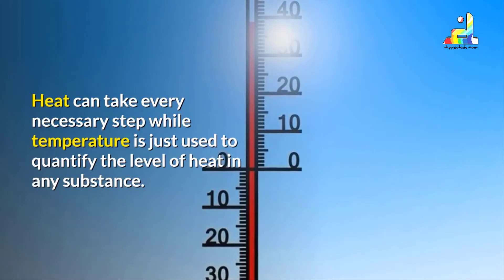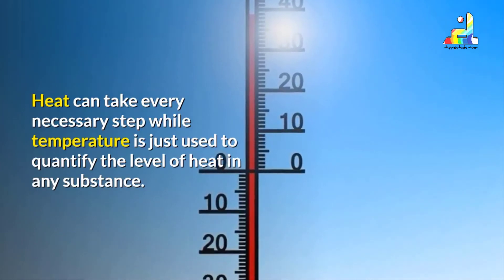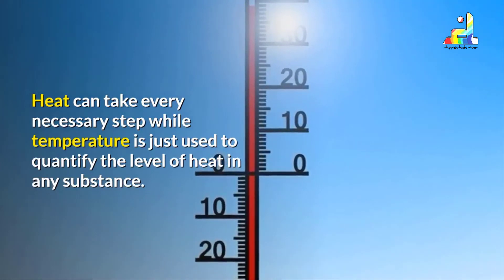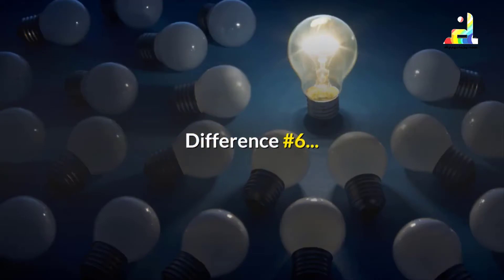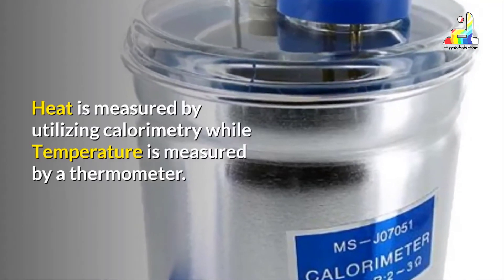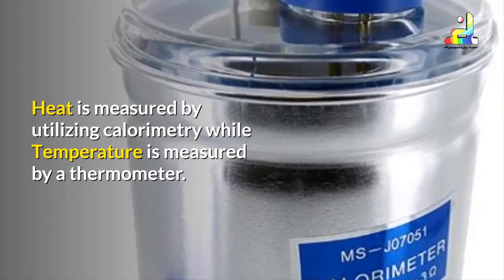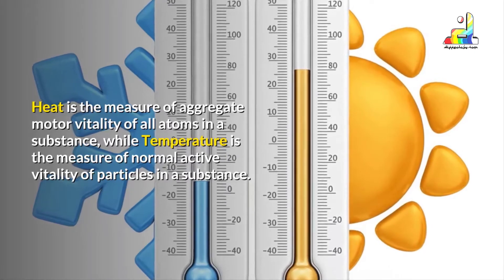Difference number five: heat can do work, while temperature is only used to measure the level of heat in any substance. Difference number six: heat is measured using calorimetry, while temperature is measured by a thermometer.